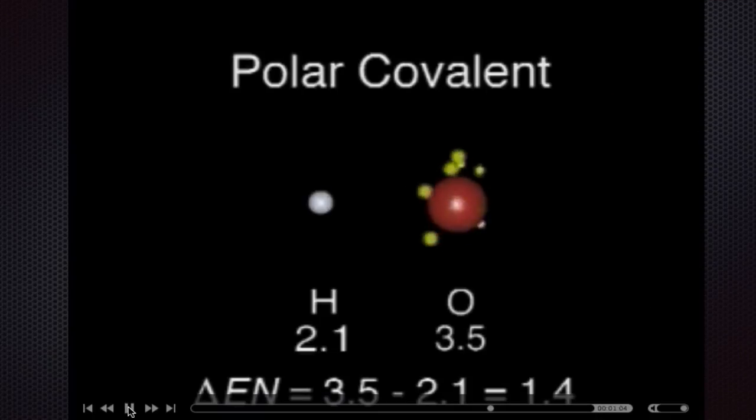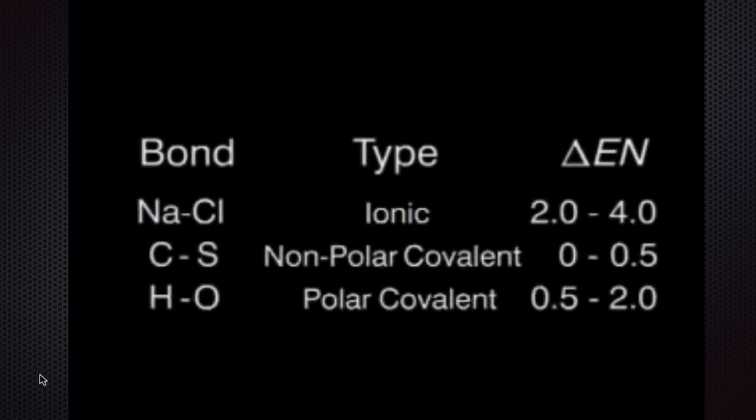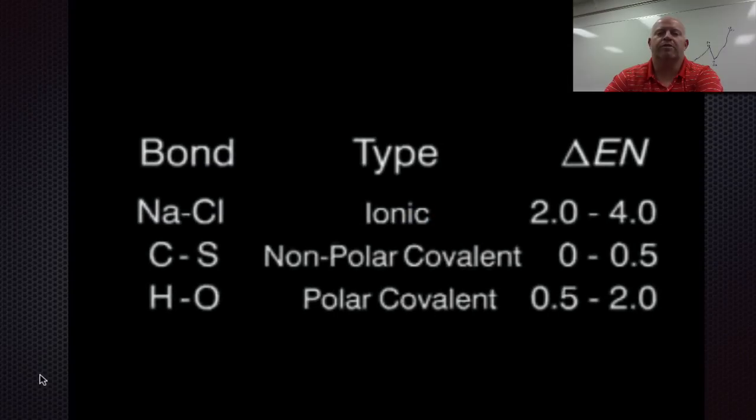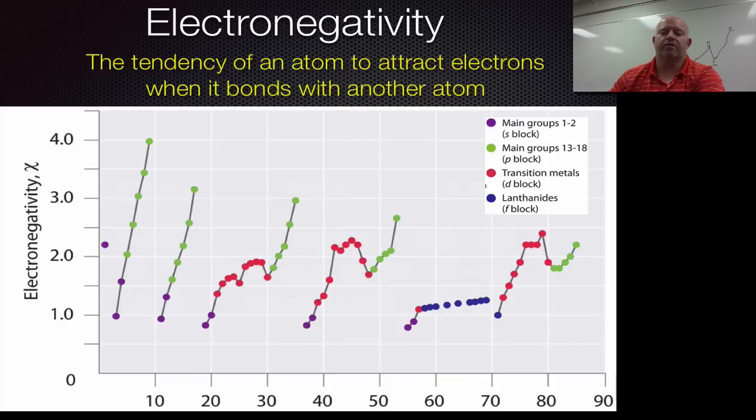This unequal sharing is called a polar covalent bond. Polar bonds have a slightly negative and a slightly positive end. Okay, so let's take a look at the actual trend for electronegativity now. So if we take a look here, again, here's our definition.